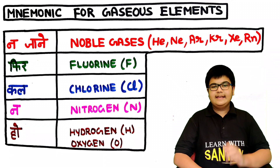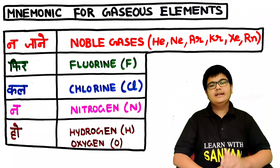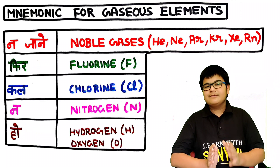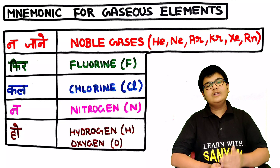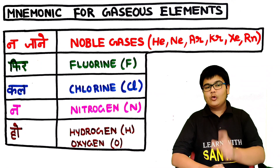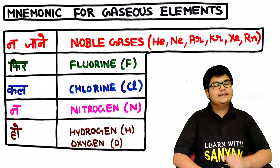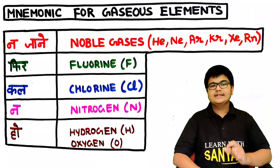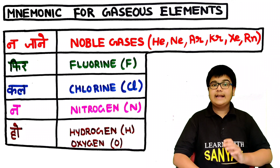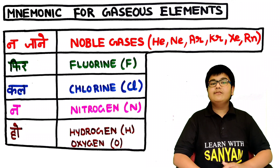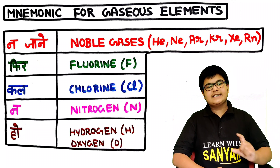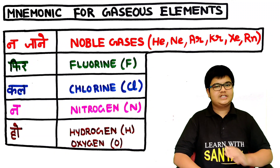The noble gases are helium, neon, argon, krypton, xenon, and radon. We have another mnemonic to remember these noble gases, which I will tell you later in the video. Then 'fir' stands for fluorine (symbol F), 'kal' stands for chlorine (symbol Cl), 'na' again stands for nitrogen, and 'ho' stands for two elements — H for hydrogen and O for oxygen.